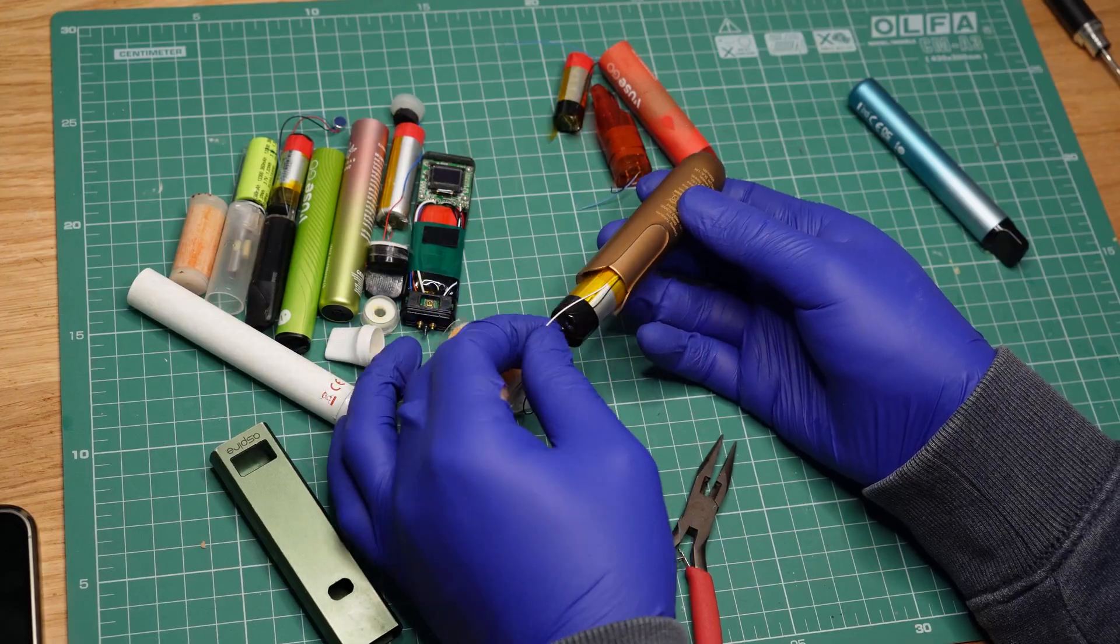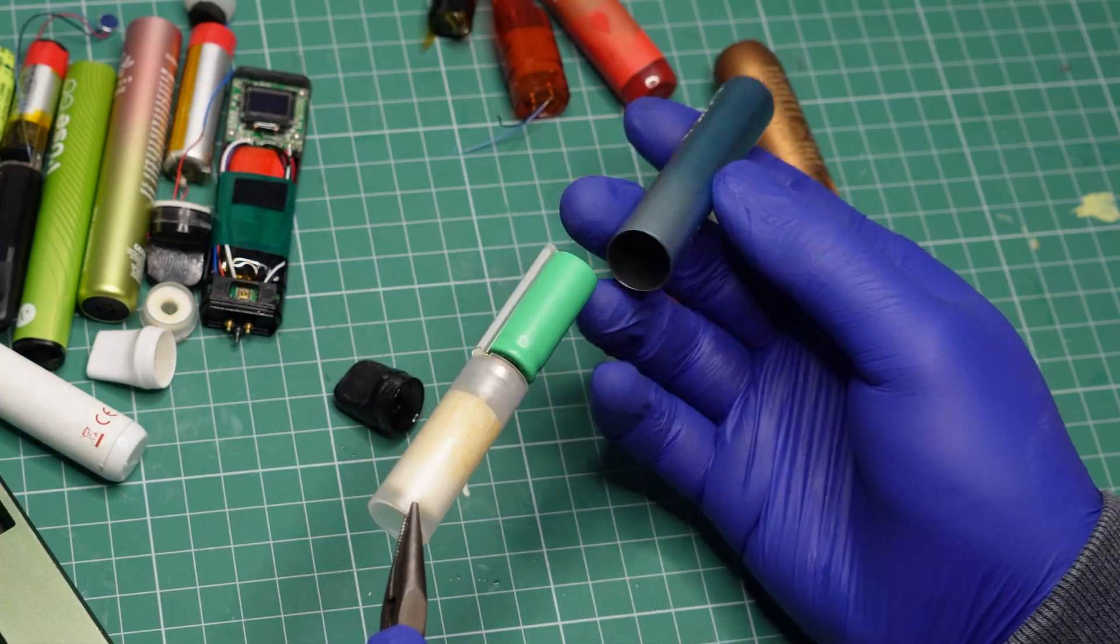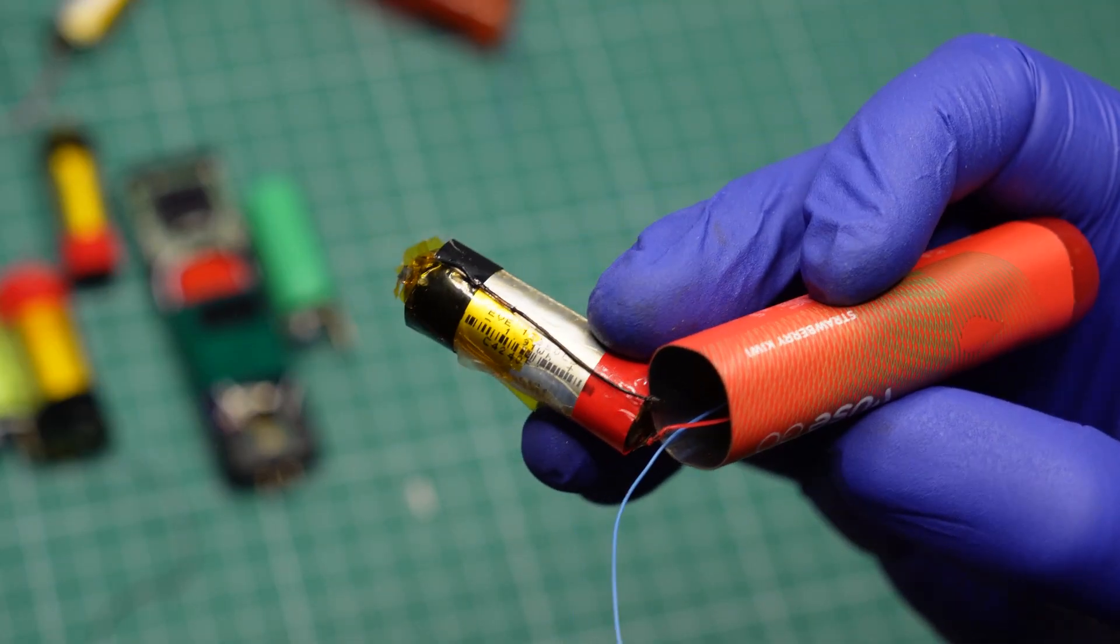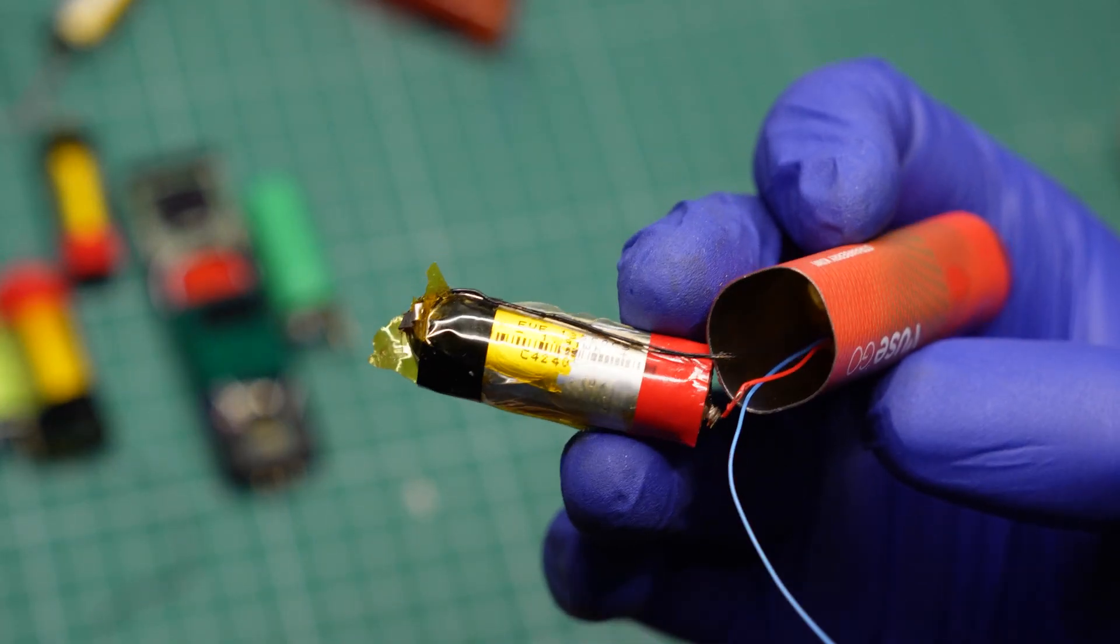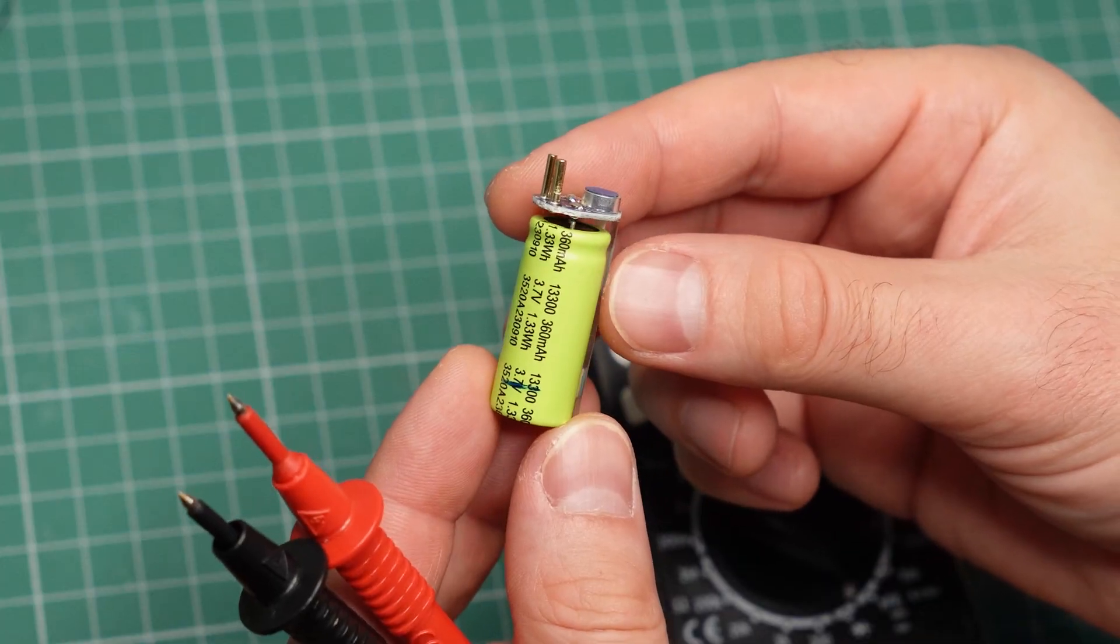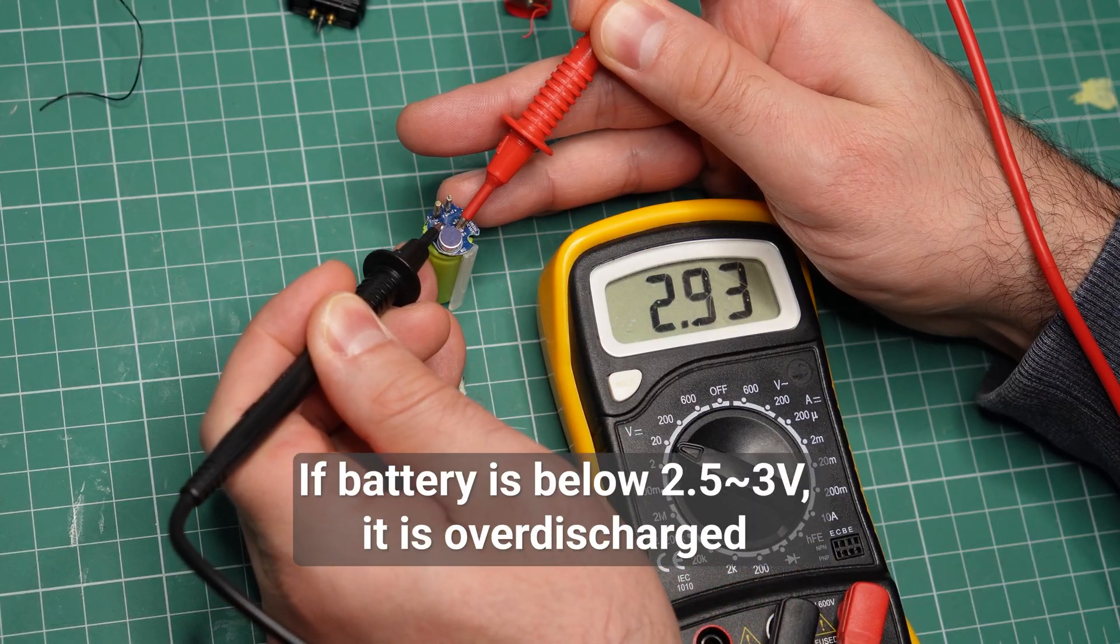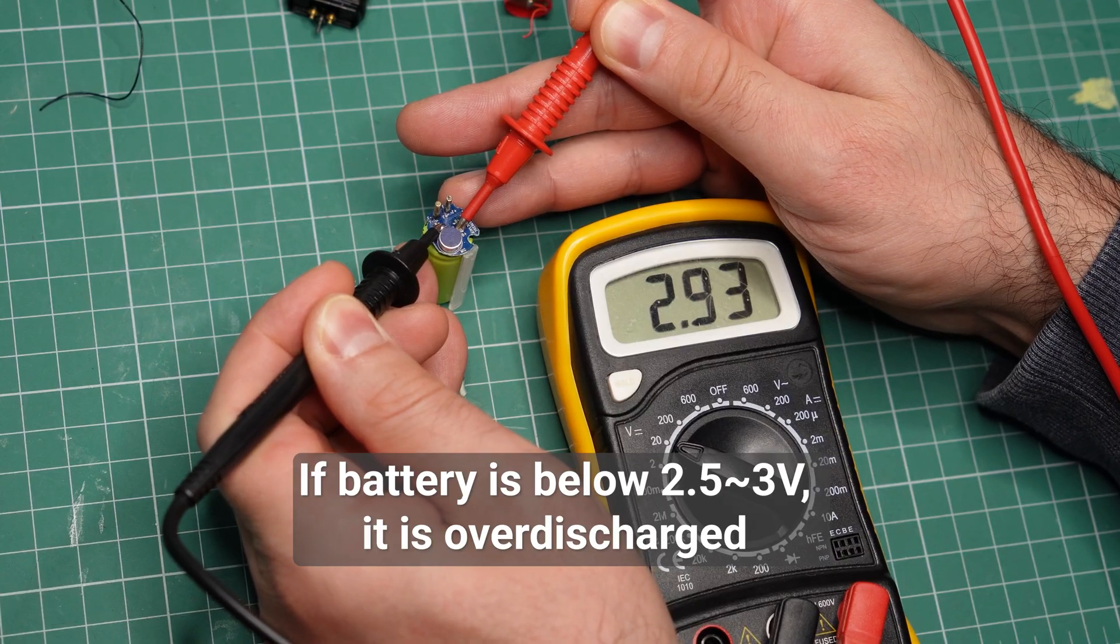So in total, I extracted seven battery cells. The question now is if they're still good to use. The one I shorted earlier is probably toast. As for the rest, I checked the voltages on every one of them. Lithium-ion cells must not be over-discharged. This cell is at 2.9 volts, so it is still usable.